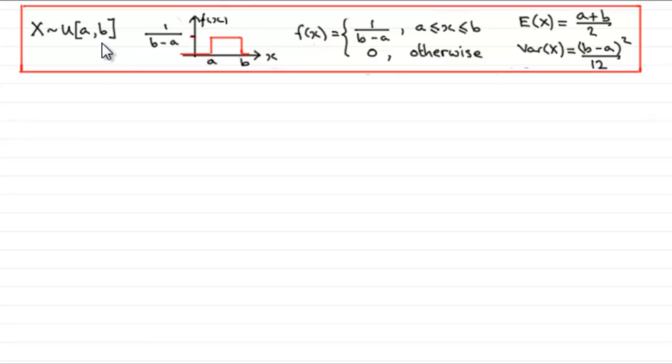Now we should be familiar with what the probability density function looks like. For our continuous uniform distribution defined over the interval a to b, f(x) equals 1/(b-a) for a ≤ x ≤ b, and 0 otherwise.